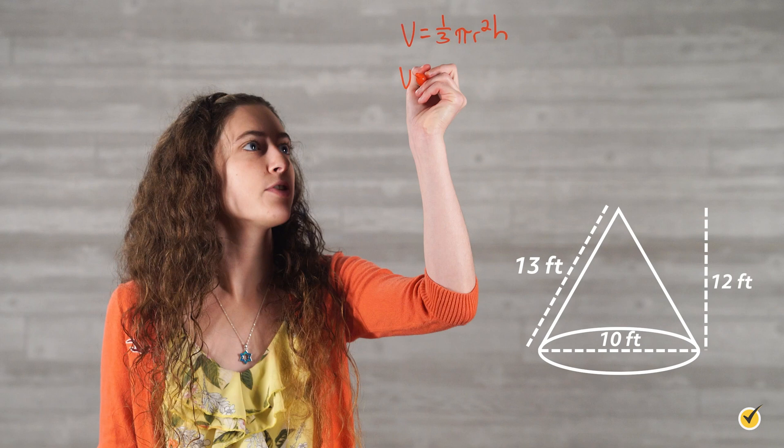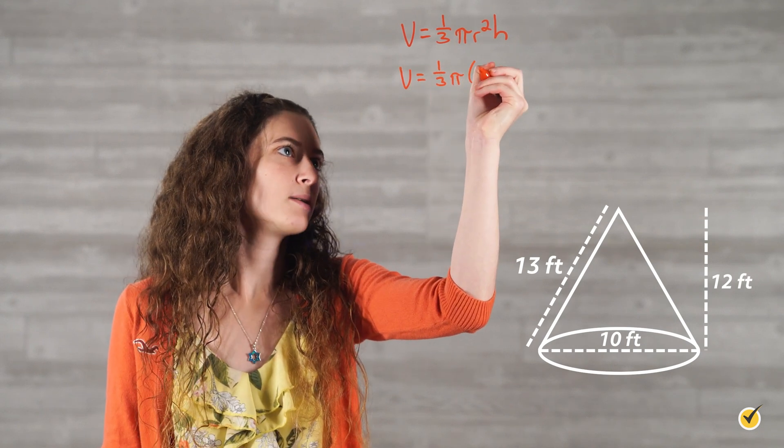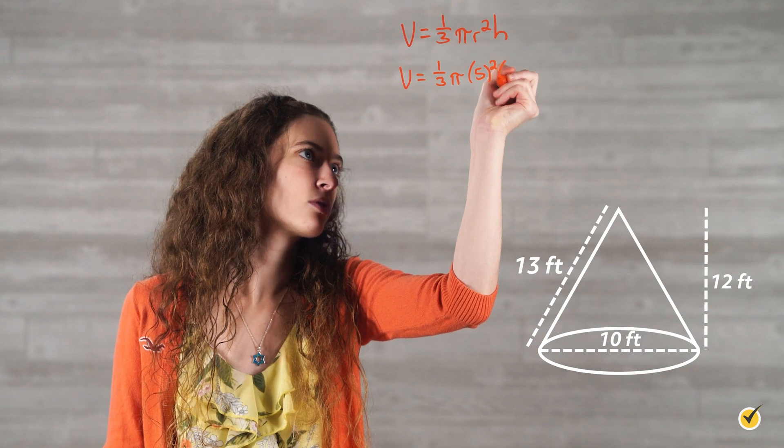If we plug in the variables that we know, we get one-third pi times 5 squared times 12.